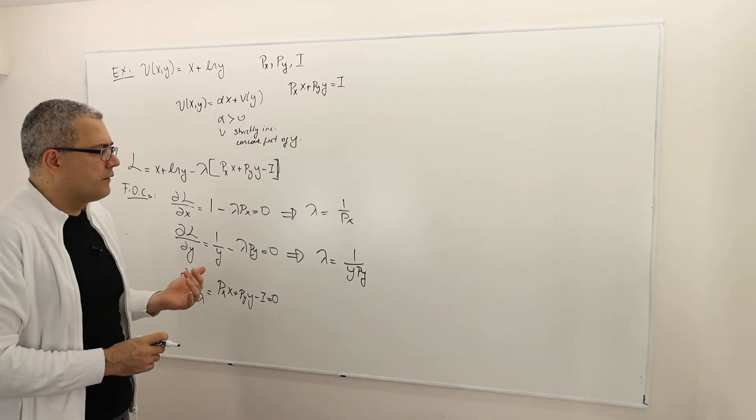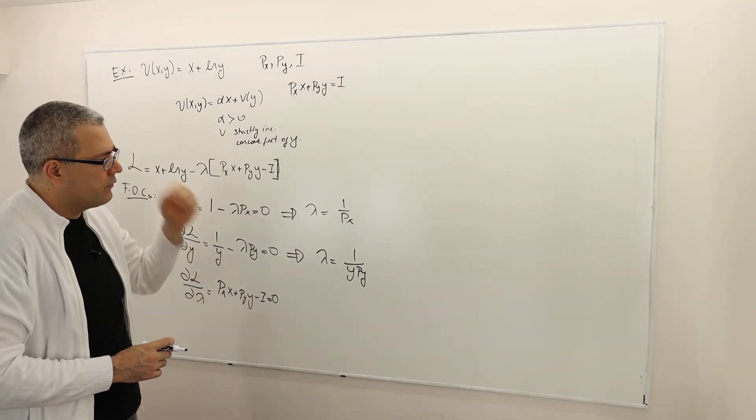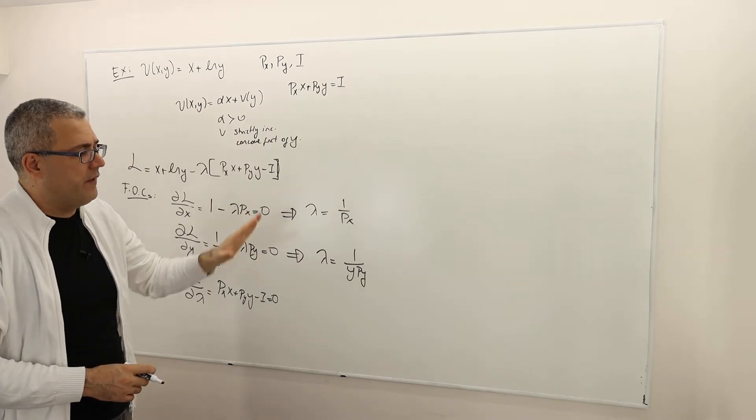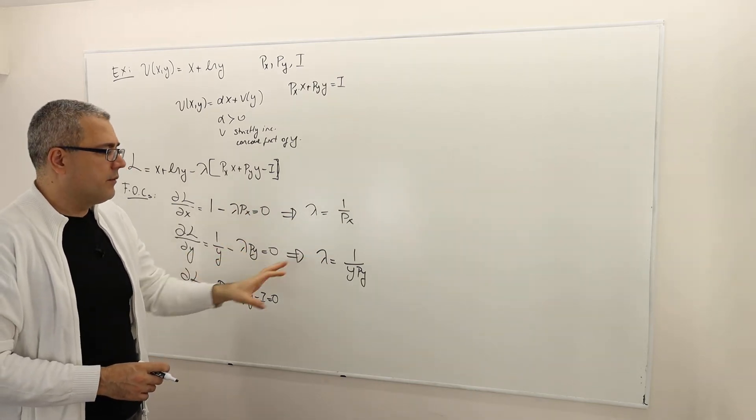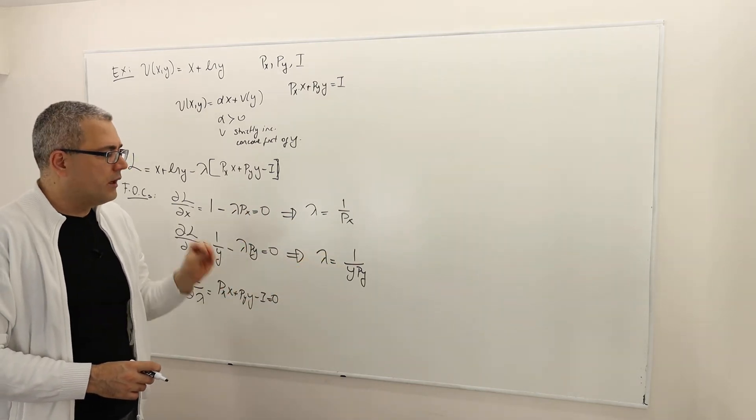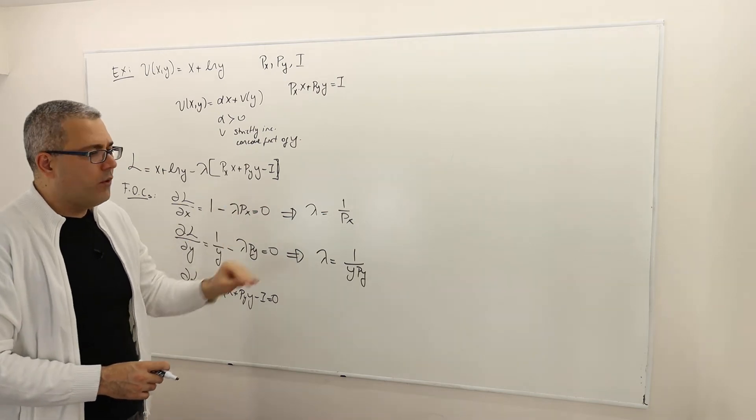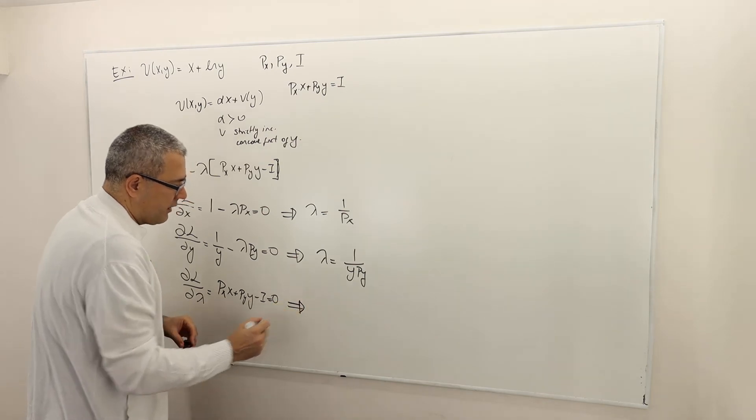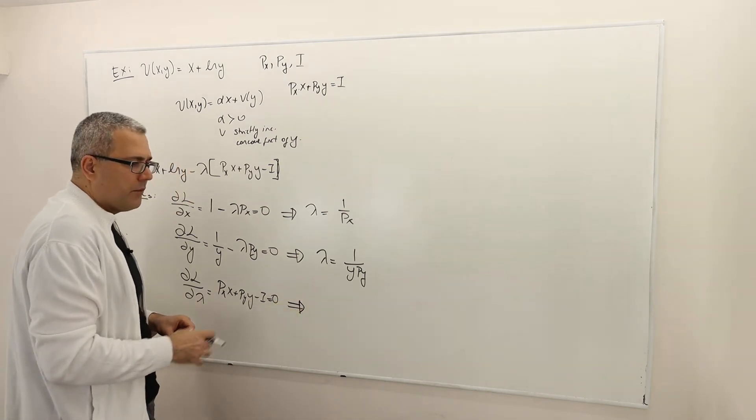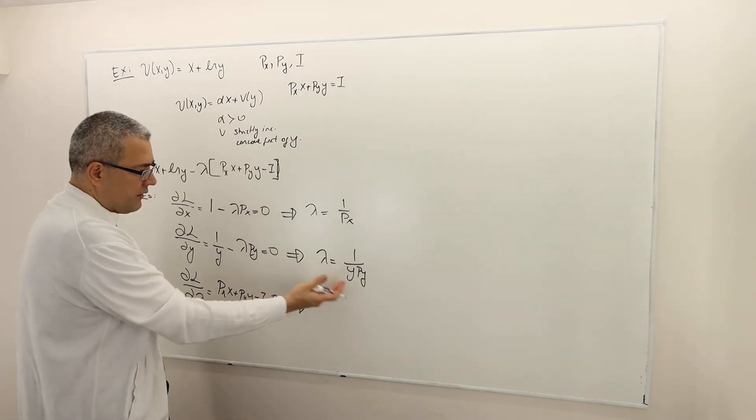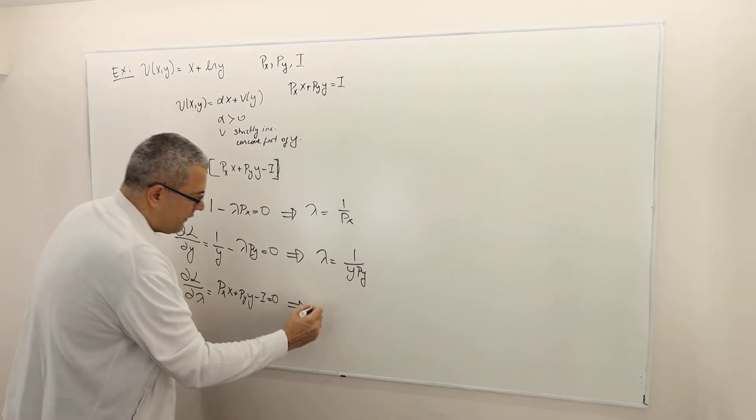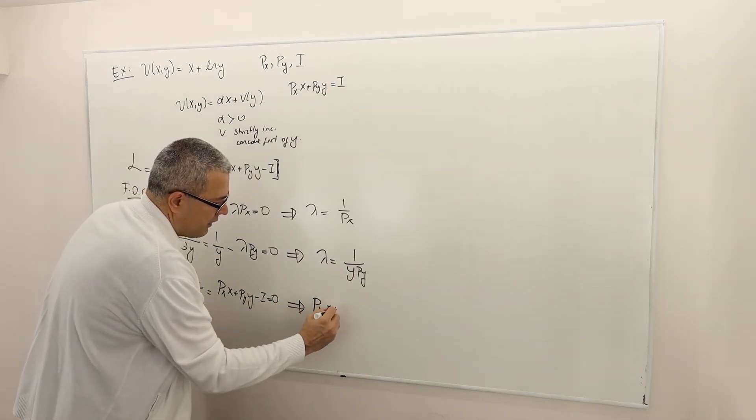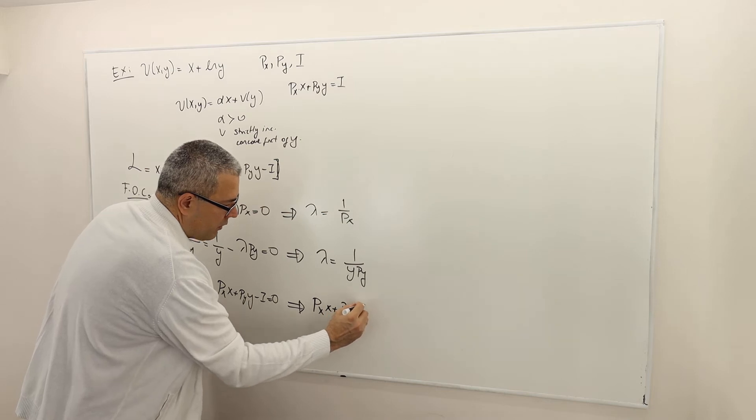This is the moment where a lot of students are confused because the x term sort of vanished. Well, that's fine. I still have the y term. That's important. If they both were vanished, that would ring a bell because things are not going to work the way that you wished. But here things are okay because I still have the y term. And this is just the budget constraint px·x plus py·y equals income.